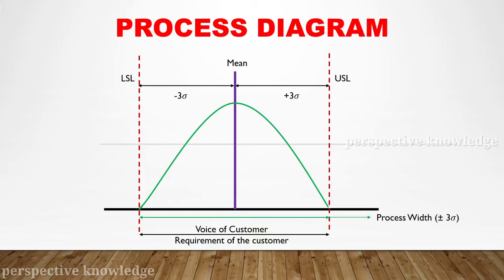If the customer has a requirement — for example, the outer diameter is 32mm — the mean value is 32. The tolerance value is 32 plus or minus 0.2. The lower specification limit and upper specification limit define the range within which the product is acceptable.